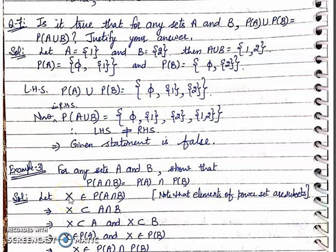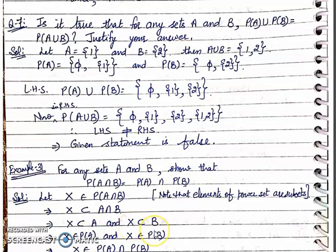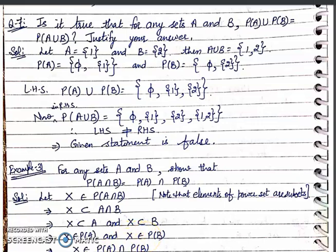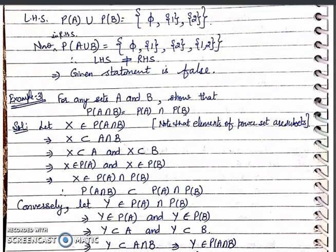You must remember this step. So, capital X belongs to P(A∩B) means capital X is a subset of A∩B. When X is a subset of A∩B, it means X is a subset of A and X is a subset of B. When X is a subset of A, then X belongs to P(A), and since X is a subset of B, then X belongs to P(B). Now, it belongs to P(A) and P(B), which means X belongs to P(A)∩P(B).